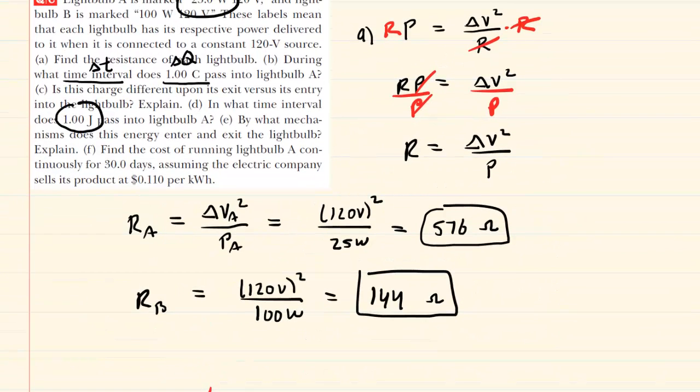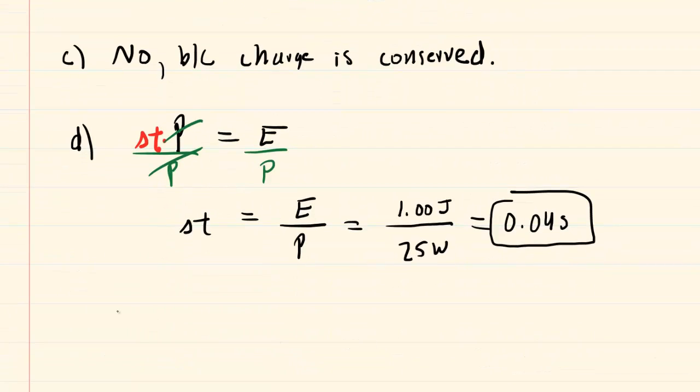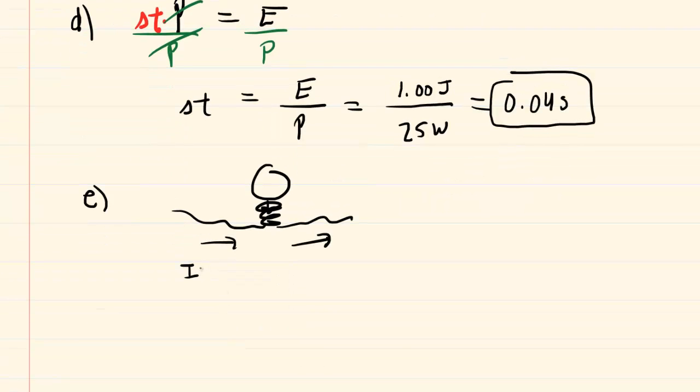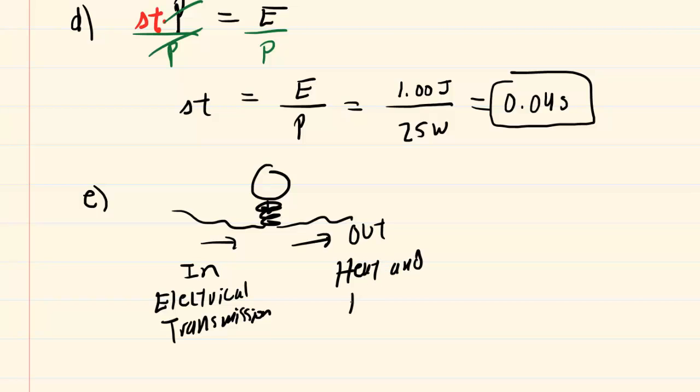Part E is a concept question. By what mechanism does this energy enter and exit the lightbulb? It's kind of a strange question. Energy mechanism. We have our lightbulb and then a wire coming in, wire coming out. We might say that the energy coming in would be electrical transmission, perhaps. And then the energy exiting in the form of heat and light. So we can perhaps say heat and radiation would be the energy that's coming out. So these would be reasonable answers for part E of this question.